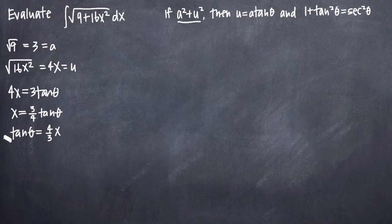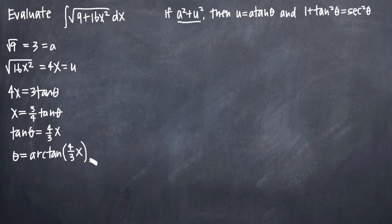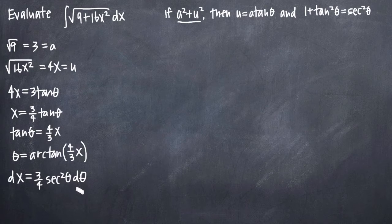We always want to solve for theta, so we'll take the arctan, or inverse tangent function, of both sides. When we take arctan of tangent of theta, they cancel, and we're left with theta equals arctan of 4 thirds x. The last thing we want to solve for is dx. Taking the derivative of 3 fourths tangent of theta, we get dx equals 3 fourths secant squared of theta d theta. We always want to add the d theta notation when we take the derivative.